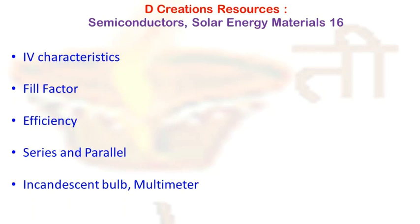Hello, we are looking at the IV characteristics of a solar cell. We have seen some parameters such as short circuit current ISC, open circuit voltage VOC, and MPP — maximum power point — and now we move forward with other parameters.